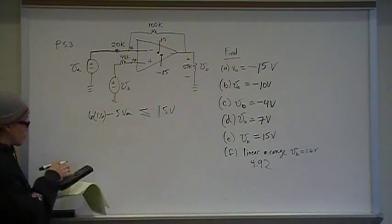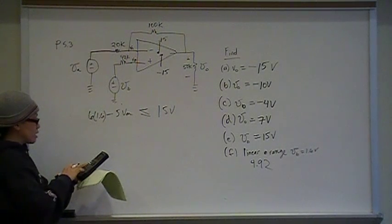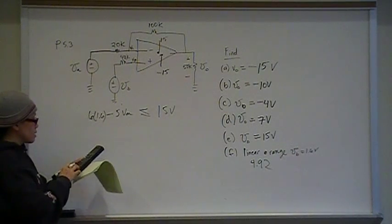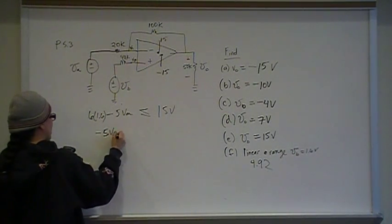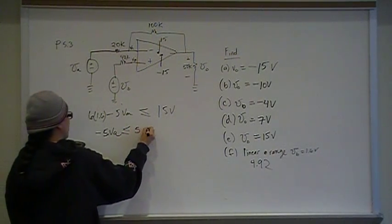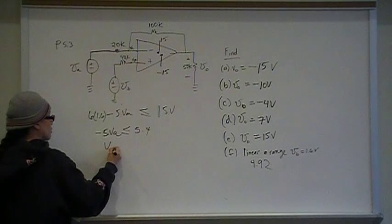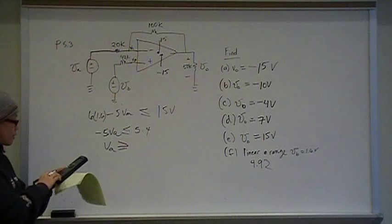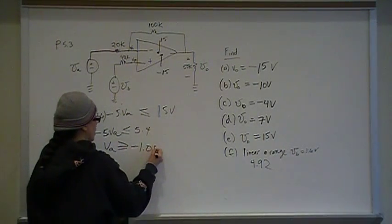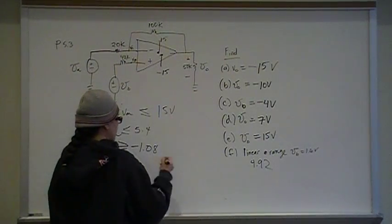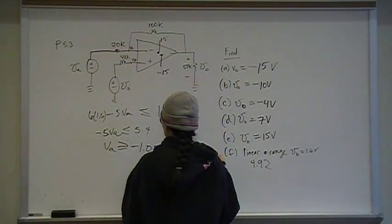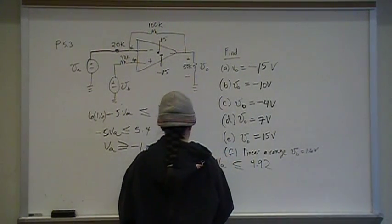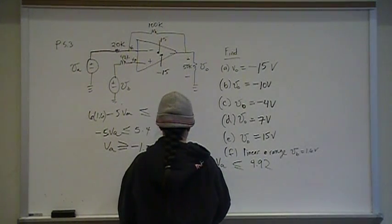Now we need the other inequality. Solving, 15 minus 6 times 1.6 gives me negative 5 VA is less than or equal to 5.4. Divide by negative 5, change the sign because we're dividing by a negative, gives me VA greater than or equal to negative 1.08. So the linear range for this, if we take VB to be 1.6, is VA less than or equal to 4.92 and greater than or equal to negative 1.08.